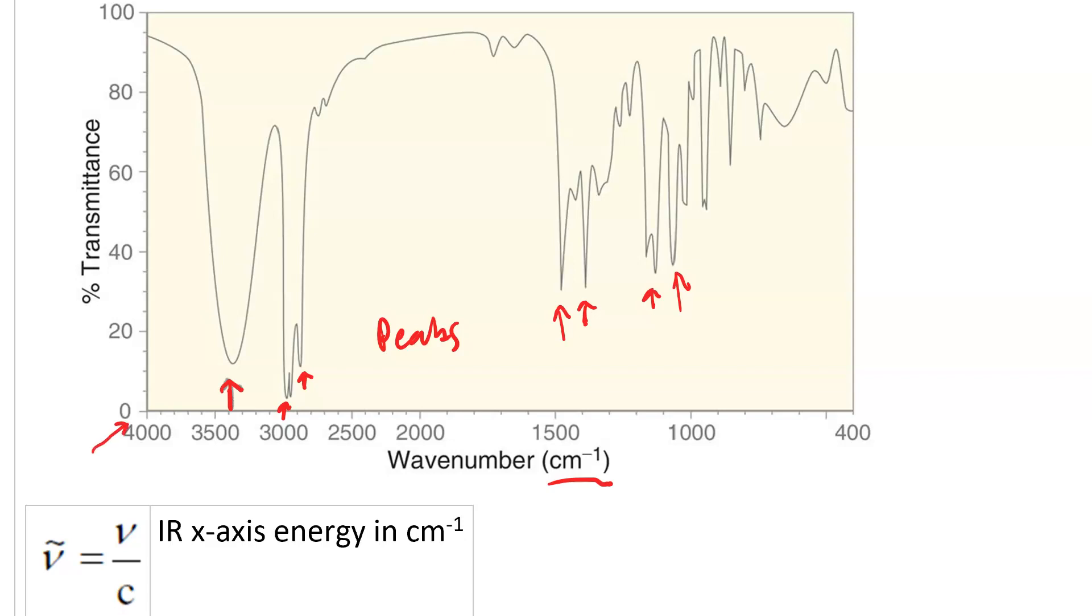At the high energy end of the spectrum, on the left, that 4000 wavenumbers corresponds to 2500 nanometers as the wavelength of the IR light. 400 wavenumbers on the low energy end of the spectrum corresponds to 25,000 nanometers. And notice that the divisions are closer together on the high energy side.